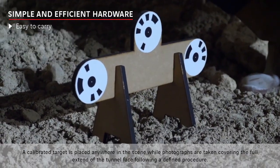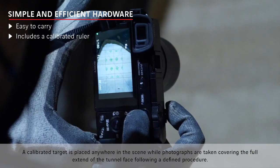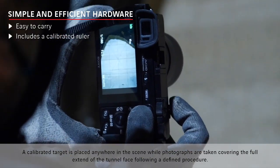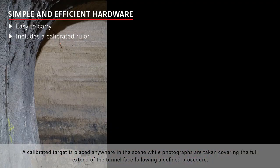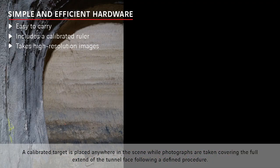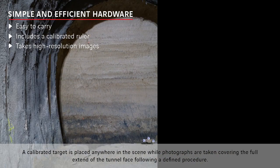A calibrated target is placed anywhere in the scene while photographs are taken covering the full extent of the tunnel face, following a defined procedure.